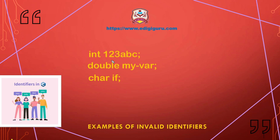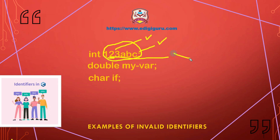Here we have declared a variable '123ABC'. This identifier includes digits and letters. While digits and letters are allowed within an identifier, this identifier starts with digits '123', which is not allowed. Therefore, '123ABC' is an invalid identifier.